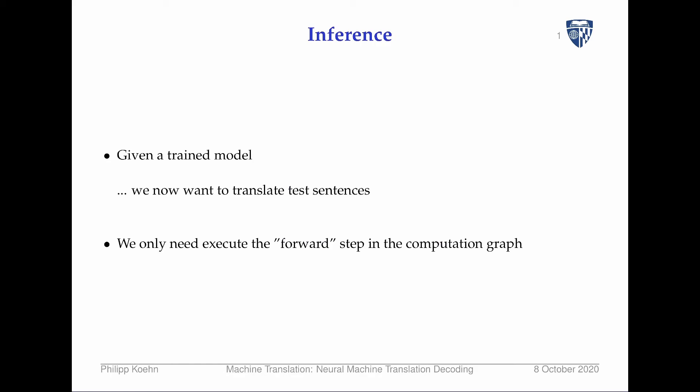In machine learning, the task we're dealing with here is also called inference. The task is: if you have a trained model and you now want to translate test sentences, you basically have to come up with the output for that — you have to infer what the translation for that test sentence is. Viewing it in the context of computation graphs, we basically just need to execute the forward step in the computation graph.